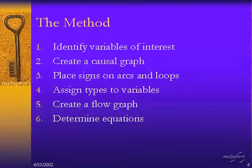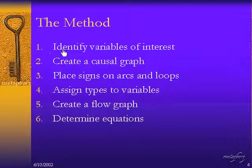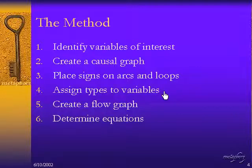There are several steps in creating a System Dynamics model, and we're going to go through an example step by step. Step one is to identify variables of interest. Step two is to create a causal graph. Step three is to place signs on the arcs and loops. Step four is to assign types to variables, whether they're constants, rates, or levels. Step five is to create a flow graph. And step six is to determine equations.